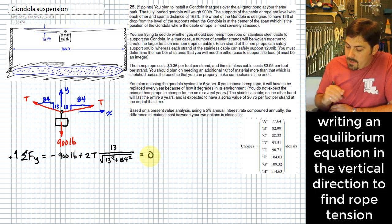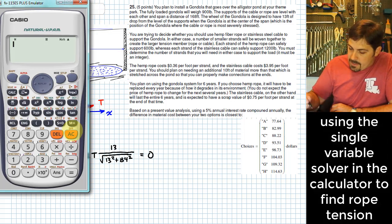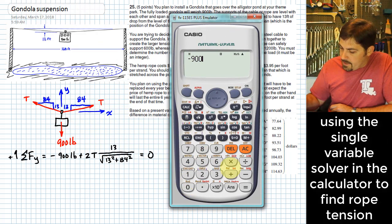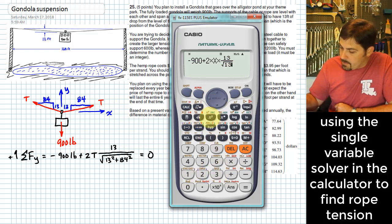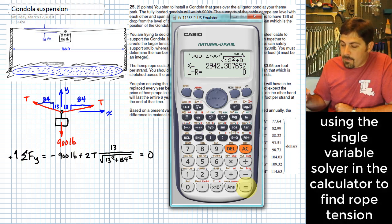To get the upward component, I take 13 over the square root of 13² + 84². That accounts for all the forces acting on the gondola. The factor of two is because there are two ropes. Plugging in directly: −900 + 2T × (13 / √(13² + 84²)) = 0. Solving for this gives a tension in the cable of 2942.3 pounds.